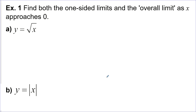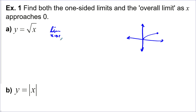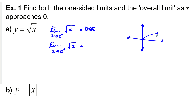Find both the one-sided limits and the overall limit as x approaches 0. For the first one, y equals the square root of x. Giving it a quick sketch, it looks like this. The limit as x approaches 0 from the left does not exist because there's nothing over there — the graph just does not exist there. The limit as x approaches 0 from the right: coming down from the right, getting closer and closer to 0, I'm getting closer and closer to 0, so that's 0. And the overall limit does not exist because these two are not the same.